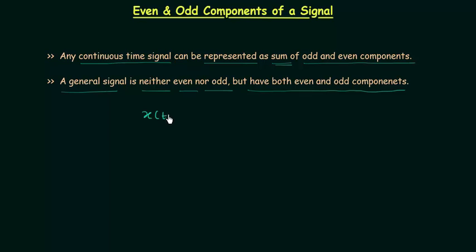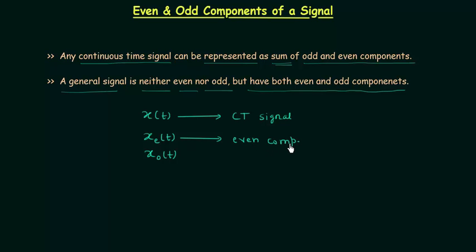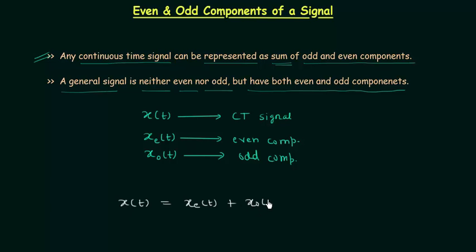Let's say x(t) is the continuous time signal. The even component of signal x(t) is represented by x subscript e of t, and the odd component is represented by x subscript o of t. From this property, a continuous time signal can be represented as a sum of its odd and even components, so we can write x(t) equal to x_e(t) plus x_o(t), and let's call this equation number 1.